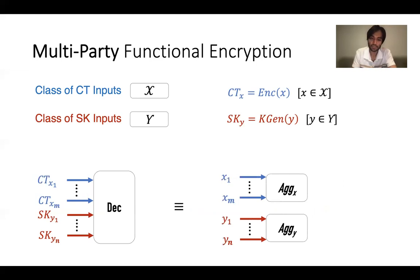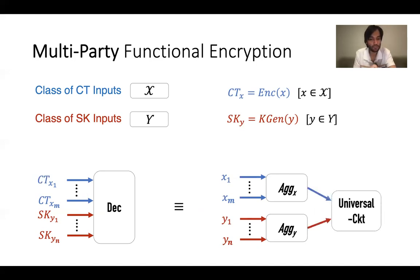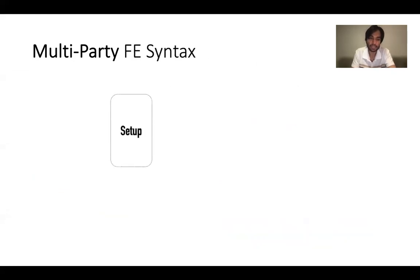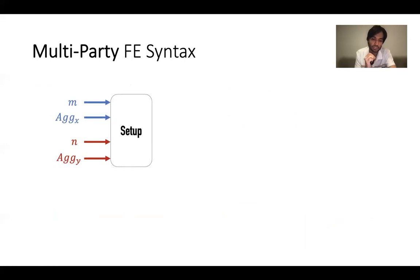The decryption algorithm computes the universal circuit on the individually aggregated input and function values. Pictorially: input values are stored inside the ciphertexts and Y values inside the secret keys. MPFE says these input values can be aggregated using the corresponding aggregation functions, and after applying the universal circuit, we learn the corresponding value of the underlying function. Syntactically, the setup algorithm takes as input the aggregation functions and the identity of the ciphertexts and secret keys to consider.